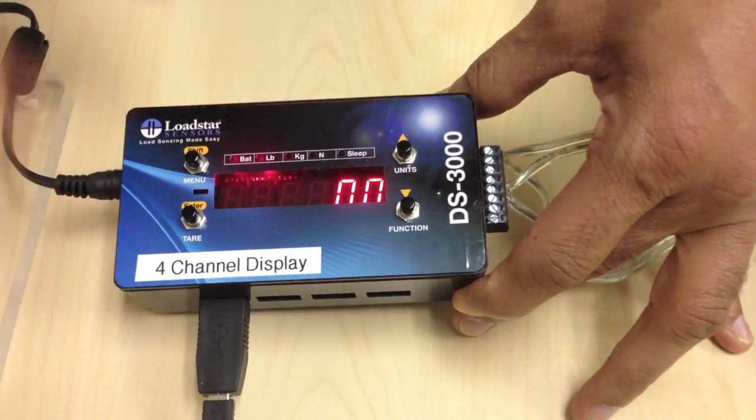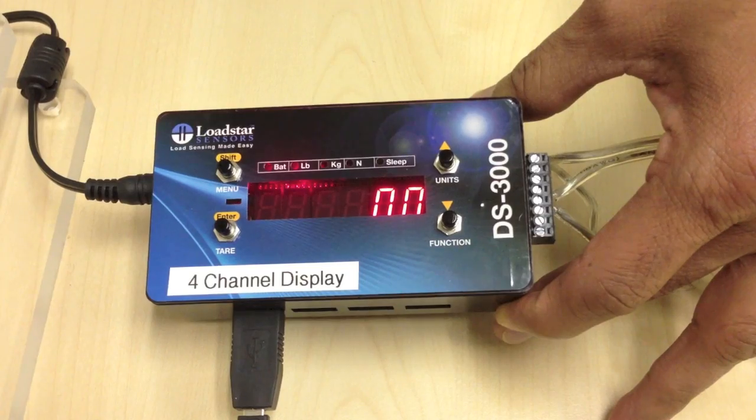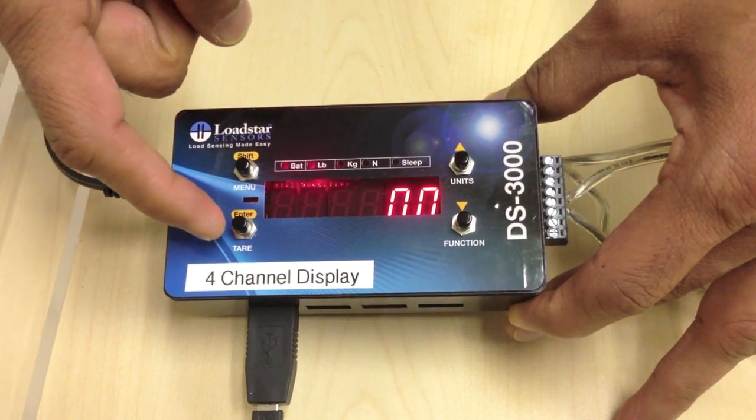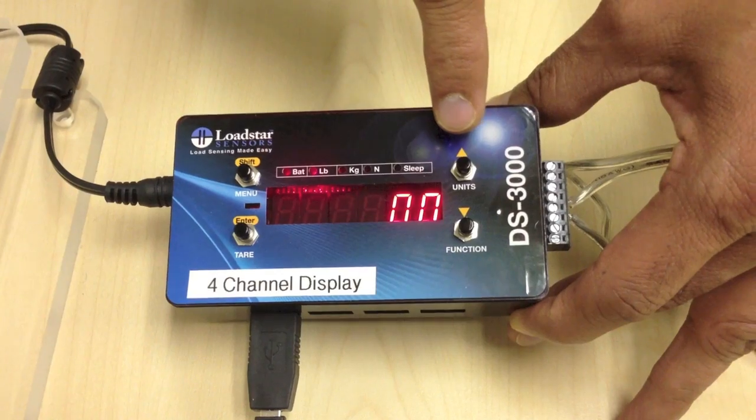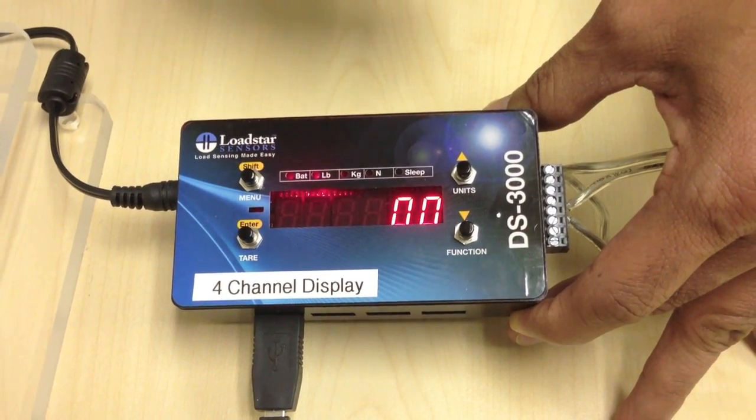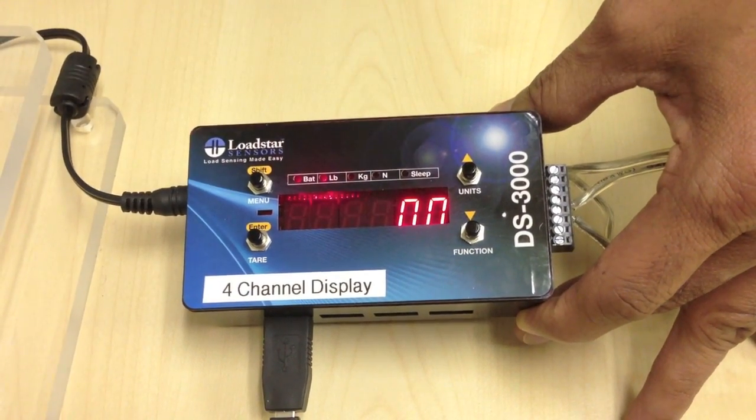It's connected to our DS3000 series digital display or controller. It has nice bright red LED displays. It has a tare button. You can also change the units so you can display it in pounds, kilogram, newtons. And there are various other functions that you can use to change the display resolution and so forth.